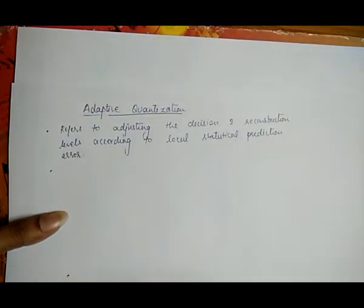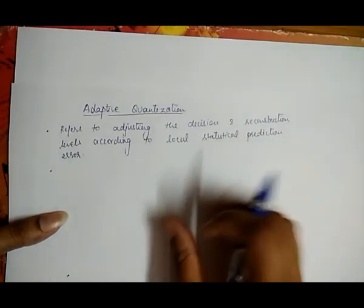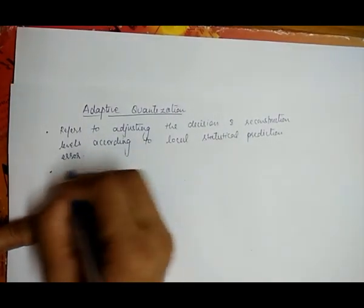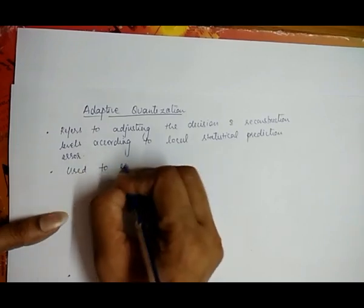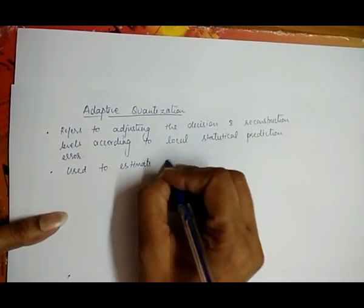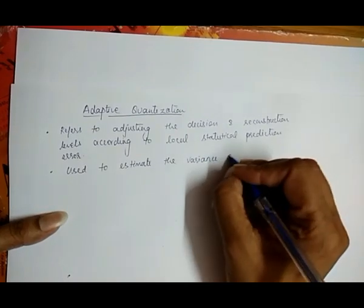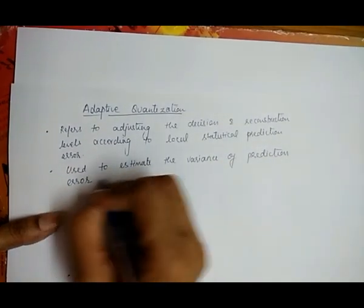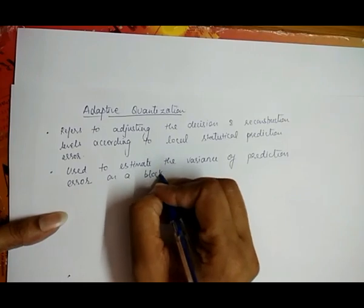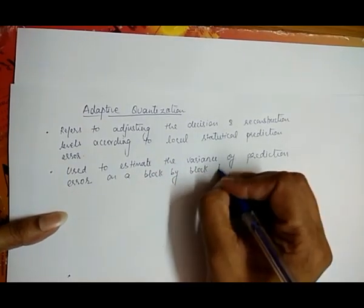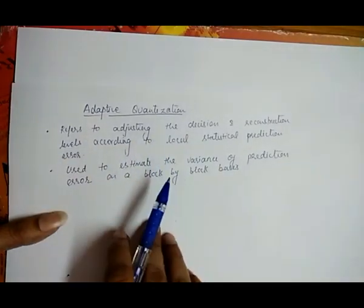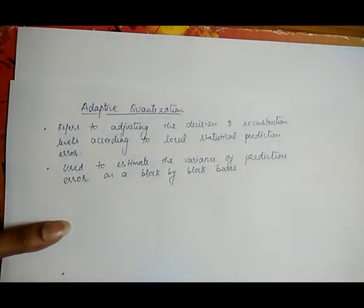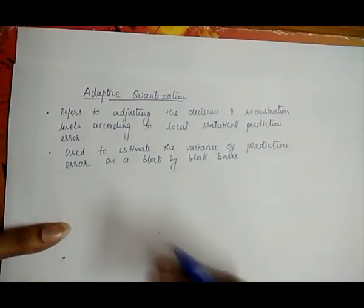Since the quantization levels are scaled by the standard deviation of the prediction error, many adaptive quantization schemes attempt to match this quantizer. A reasonable strategy is used to estimate the variance of the prediction error on a block-by-block basis. This adaptive quantization is used to estimate the variance of the prediction error on a block-by-block basis, meaning data is sent in blocks.